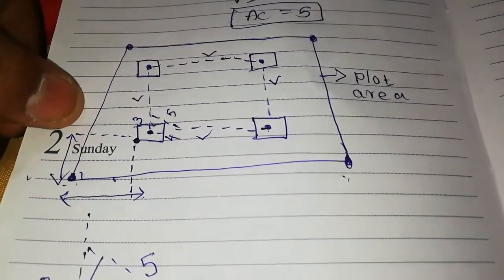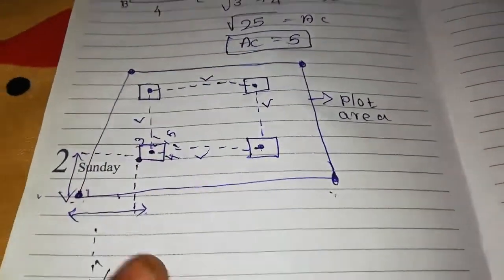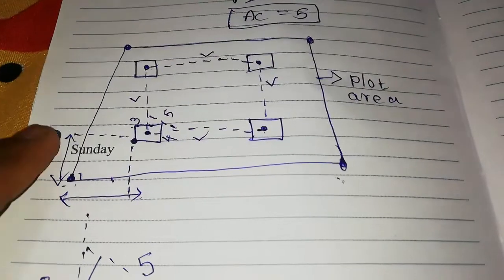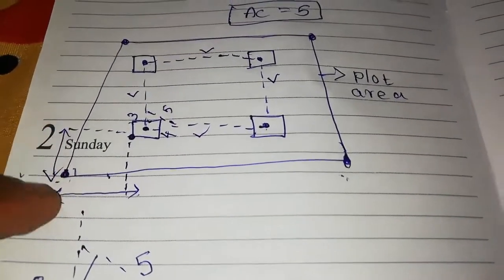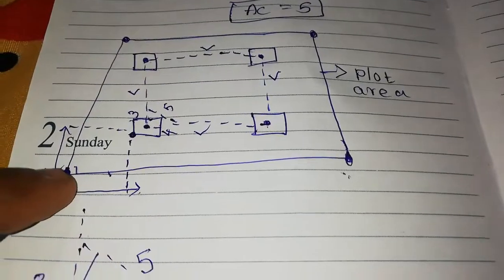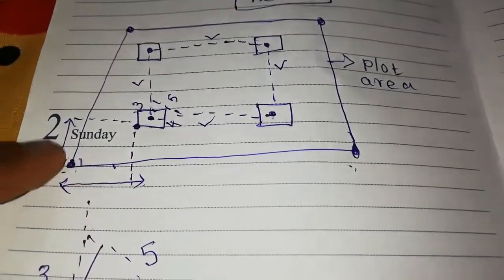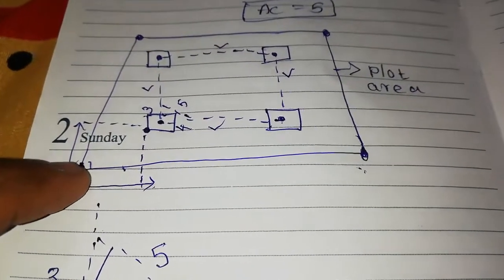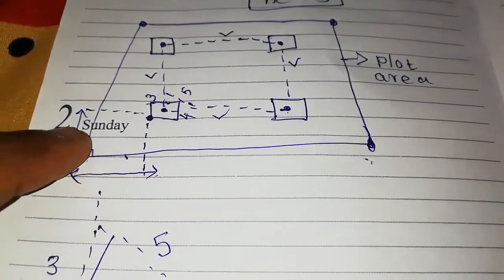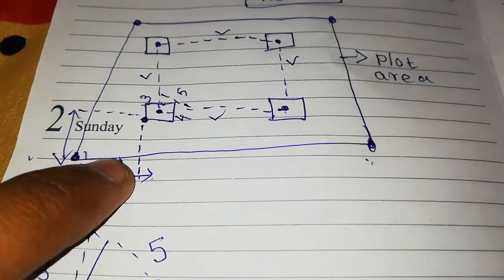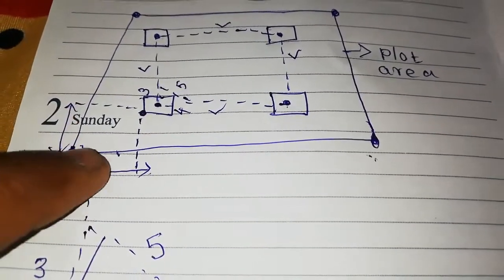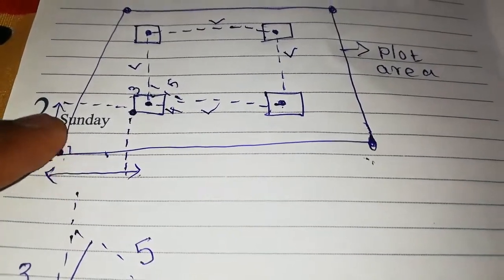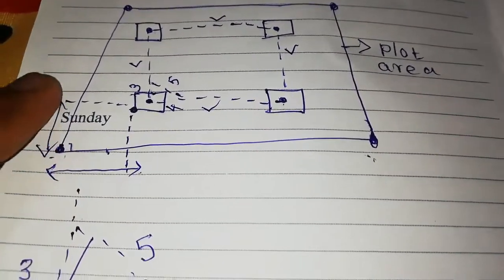I can show you 5 meters. So now we have a straight rod of 5 meters. We have a rod and thread. Here is 3 meters and here is 4 meters, and that is 5 meters.